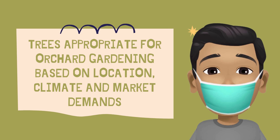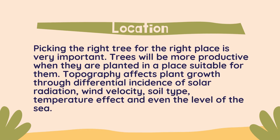Here are some photos of seed orchards. It is important for us to know the trees appropriate for orchard gardening based on location, climate, and market demands. In having an orchard, we should consider our location. Picking the right tree for the right place is very important — trees will be more productive when planted in a place suitable for them. Topography affects plant growth through differential incidence of solar radiation, wind velocity, soil type, temperature, and even sea level.